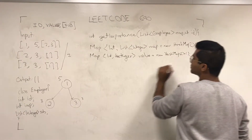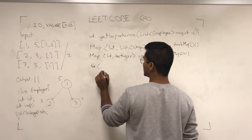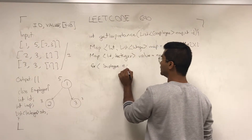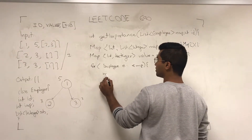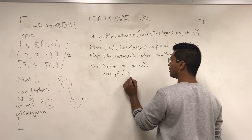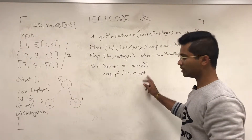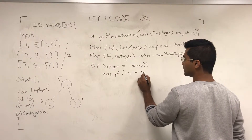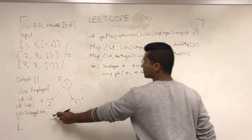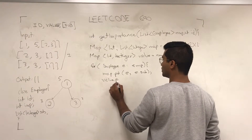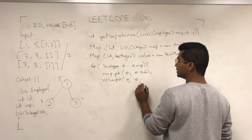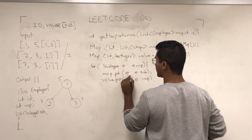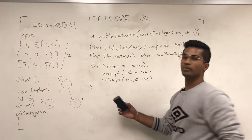Now we have a for-each loop: for Employee e through employees, we're going to have map.put(e.id, e.subordinates). Luckily the class is made of a list of integers for the subordinates. And then for the value map, we're going to do value.put(e.id, e.importance). So this is going to build the two maps that we need.